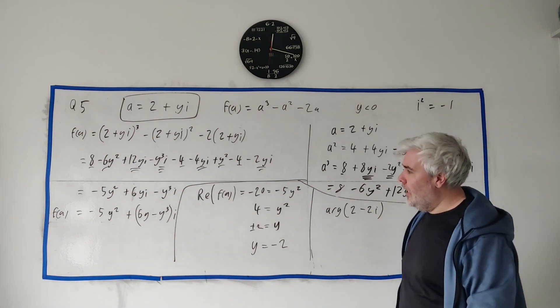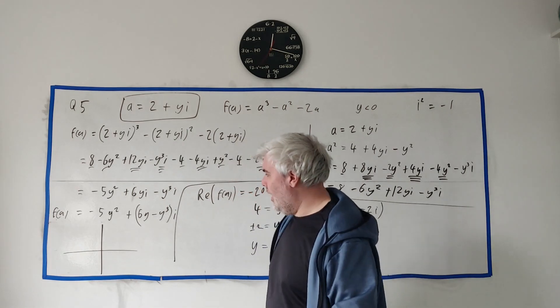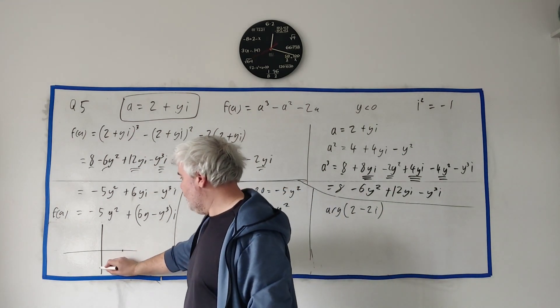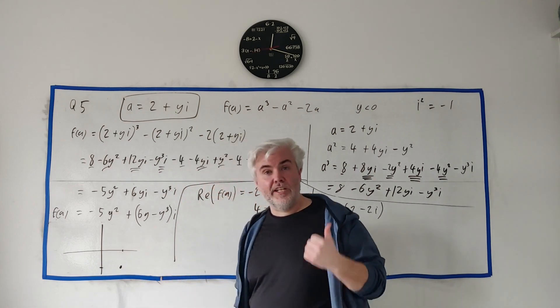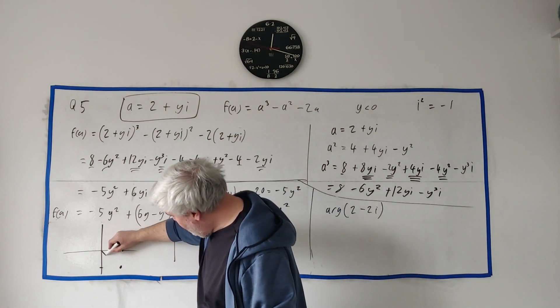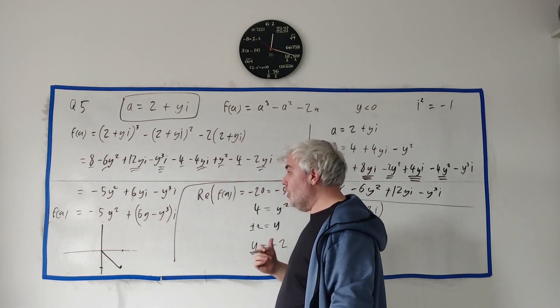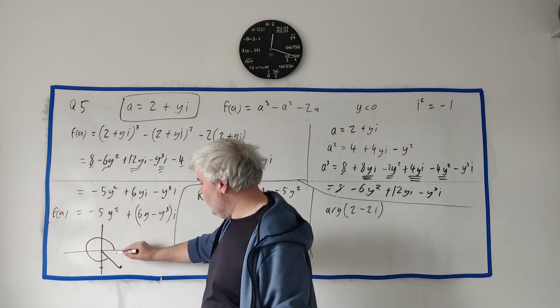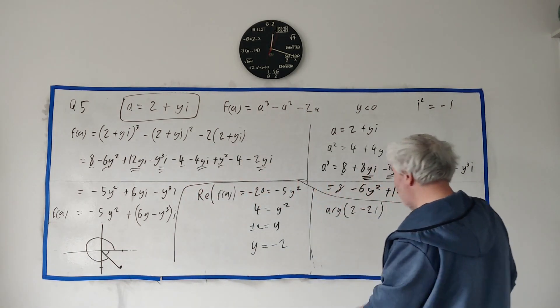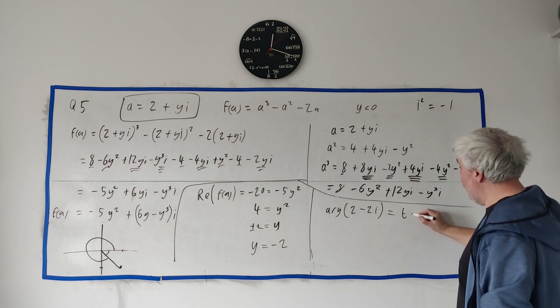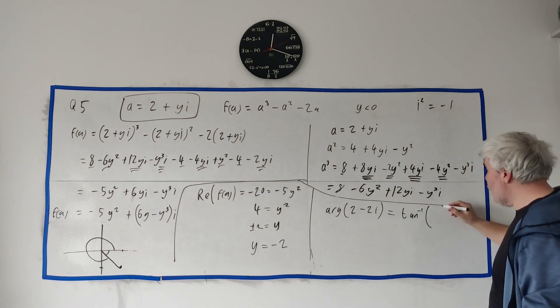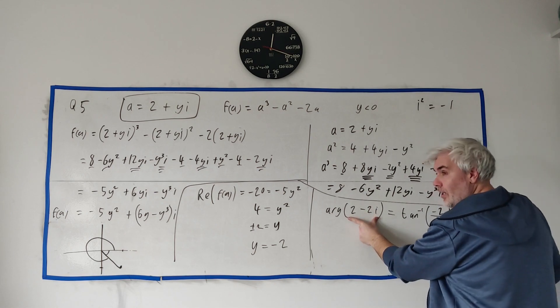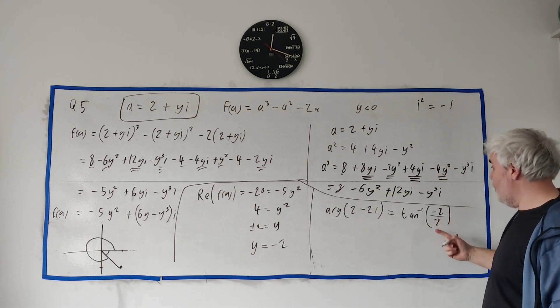So they just want to find the argument of this. And remember what the argument is. The argument, when we have a complex number, I'll use this one here. 2 minus 2i. We can draw that. Here's 2. Here's minus 2i. Draw that down here. That's that complex number. The modulus is the length to the middle, to the origin. And the argument is the angle to the x-axis. So you can either give them this answer, this long one across, but it's much more common to give them this answer in here. And there's a formula for that. The argument is just equal to the inverse tangent of the imaginary part. So we could write the imaginary part of this. It's just minus 2. Divided by the real part of this, which is just 2.